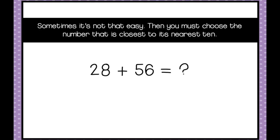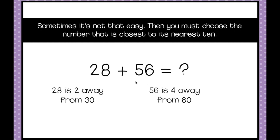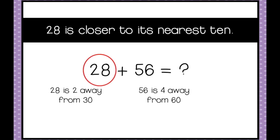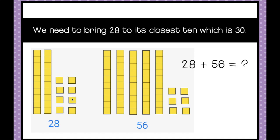Sometimes it's not that easy — then you have to choose the number that is closest to its nearest 10. Here we have 28 plus 56. 28 is 2 away from 30 and 56 is 4 away from 60, so you're just looking for the one that's closest to its nearest 10. The 28 is closer; it's only 2 away from 30. So let's take a look at the base 10 blocks again — we've got 28 plus 56 and we need to bring 28 to 30.